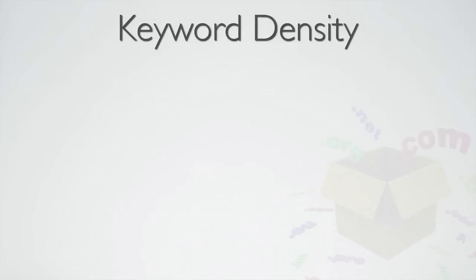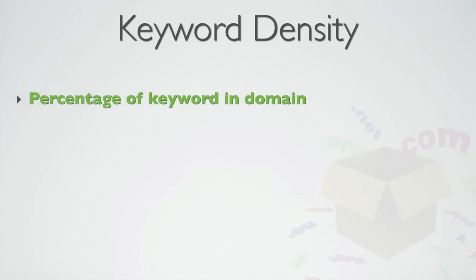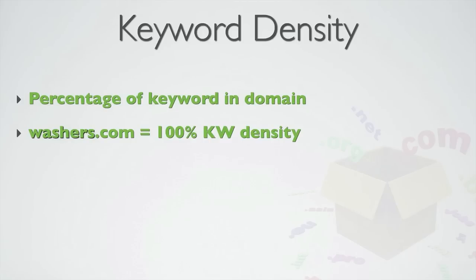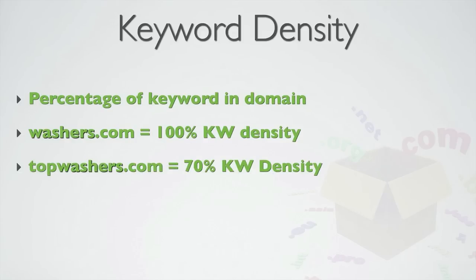By keyword density, I mean what percentage of the domain name before its extension — the bit before the .com or .org — is the actual keyword versus what percentage isn't. For example, if your main keyword was washers, then washers.com has a keyword density of 100% because there are no other letters in there. Topwashers.com has a 70% keyword density because 7 out of 10 letters include the keyword, whereas 3 of the 10 letters — 30% — are non-keyword related.